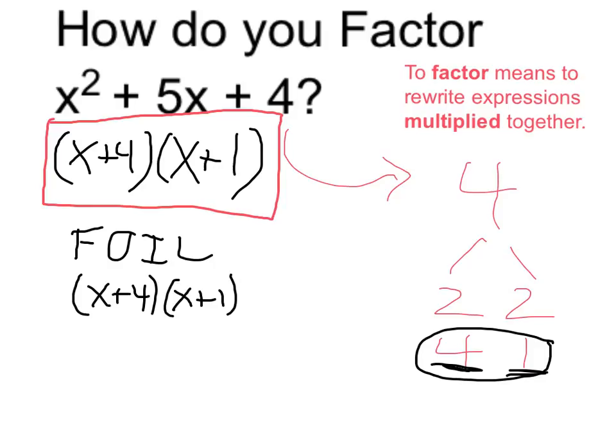FOIL, or multiply these together. My first terms, first times first, is going to be x squared. Then I get x times 1, or simply x, then 4 times x is 4x.